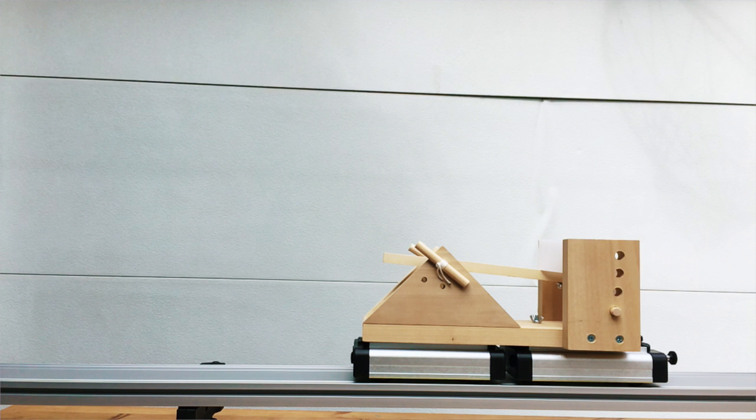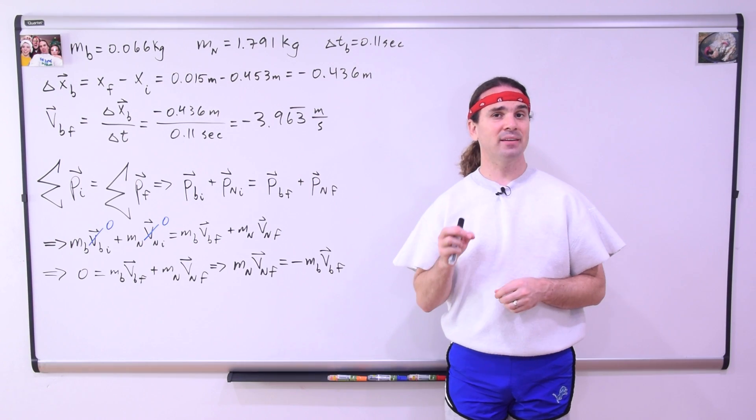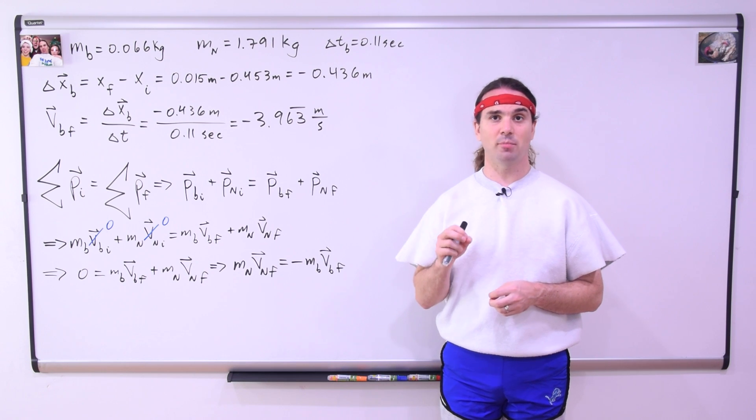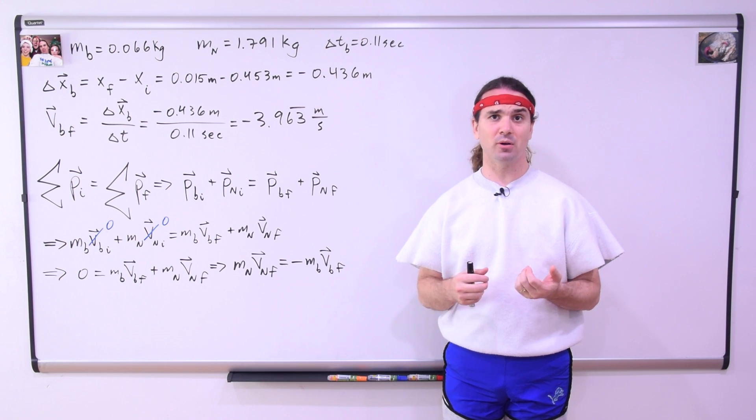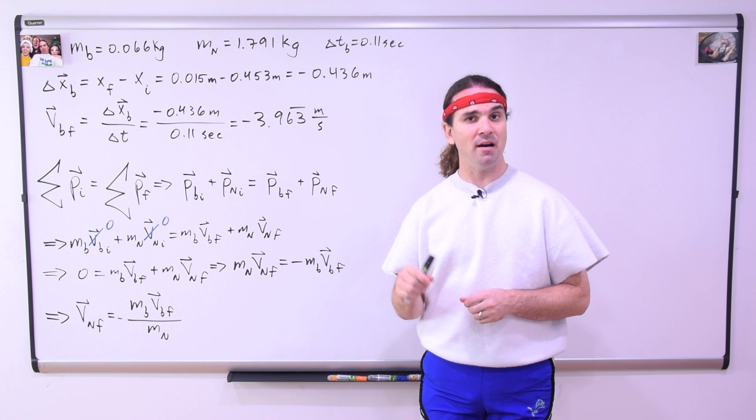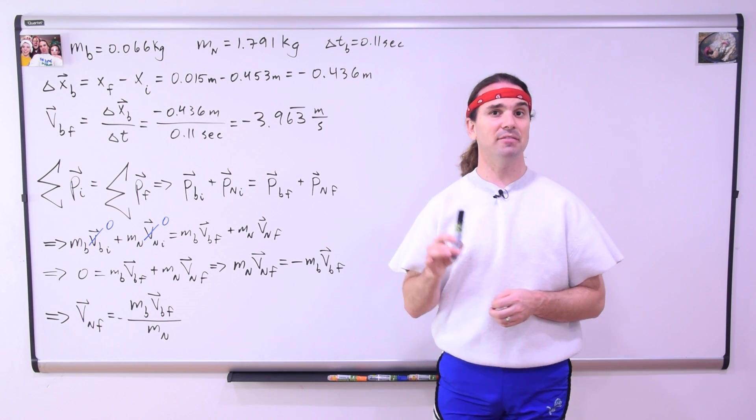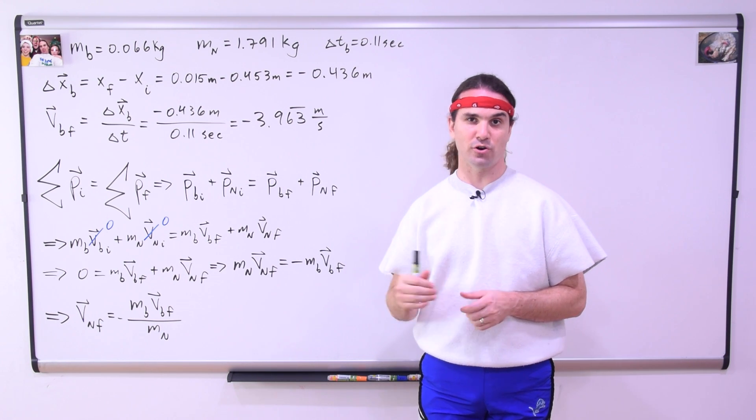And class, what is the initial momentum of the system? In other words, before the explosion, what is the initial momentum of the ball and the nerdapult? Zero. And we can subtract the mass of the ball times the velocity of the ball final from both sides, and then we can divide both sides by the mass of the nerdapult to get the velocity of the nerdapult final equals the negative of the mass of the ball times the velocity of the ball final, all divided by the mass of the nerdapult.